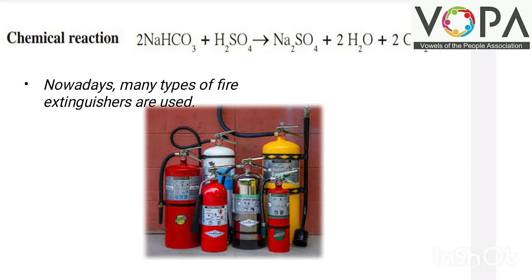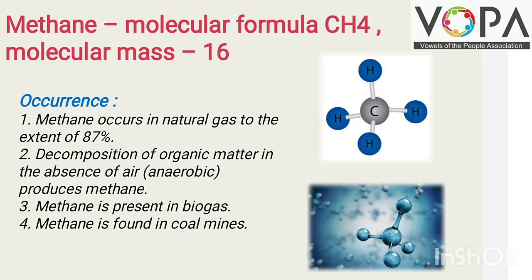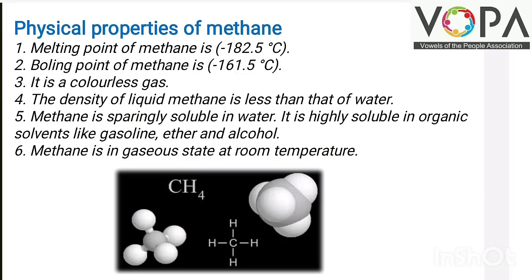Next important topic is methane. Methane's molecular formula is CH4 and molecular mass is 16. Methane occurs in natural gas to the extent of 87 percent, and methane is also present in biogas. Methane is found in coal mines, meaning it is obtained from coal mines. It is produced anaerobically.